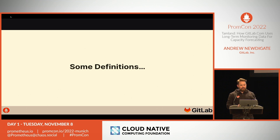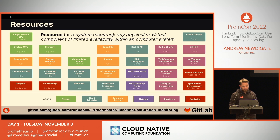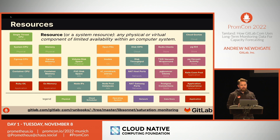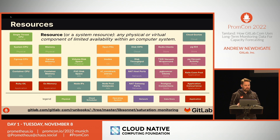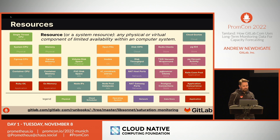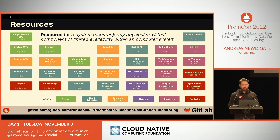Let's define a few terms we're going to use through this talk. The first term is a resource — any component within a computer system that has limited availability. People tend to focus on physical resources such as CPU, memory, or bandwidth, which are of course very important. But at every level of abstraction within a system, there are resources with finite capacity. For example, at the operating system level, a process has a limited number of file descriptors it can open at any one time. Kubernetes applies many more limits, such as disk space within a persistent volume claim, and of course memory and CPU limits.